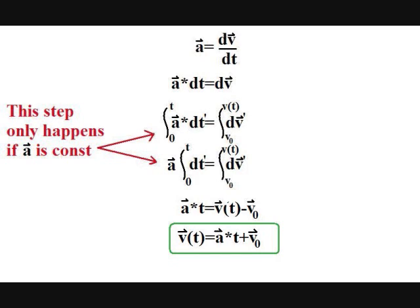Now we have derived an equation based on the assumption that acceleration is constant. Notice that if we don't assume the acceleration is constant, then we can't pull out the acceleration from the right-hand side integral. So this equation, v of t equals v naught plus at, is valid if and only if the acceleration is constant.